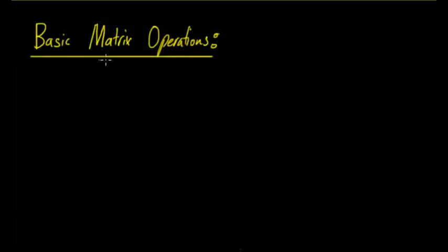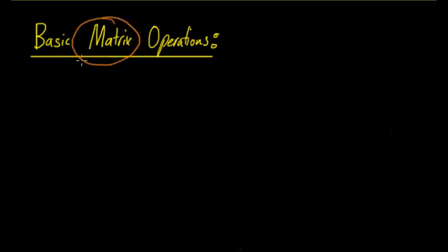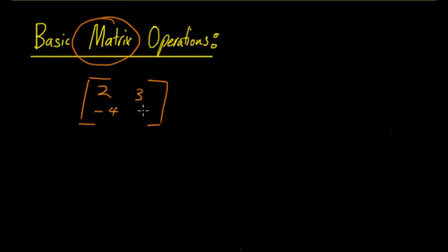In this video we're going to be doing some basic matrix operations. These will be useful in later topics where you'll need to add matrices, multiply them, or possibly calculate the determinant. You do need to know these basic skills. A matrix is written in square brackets and has terms in them, such as 3, 2, 3, negative 4, 6 — numbers in each of the positions.